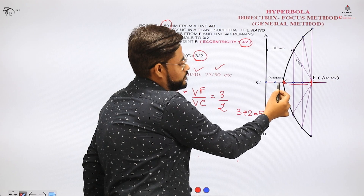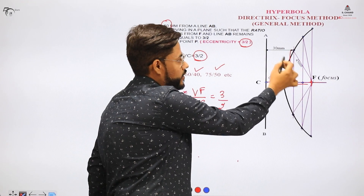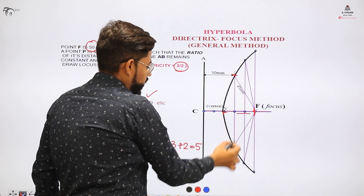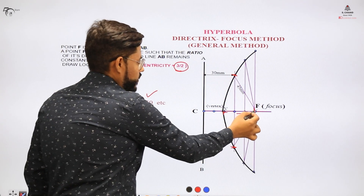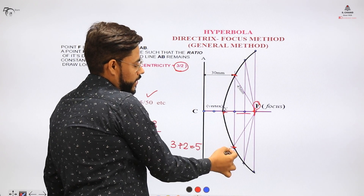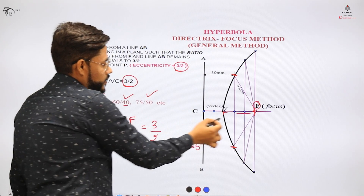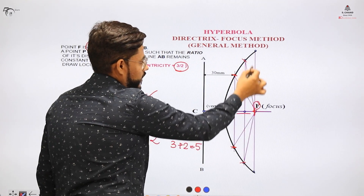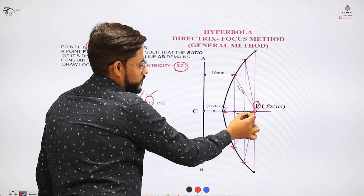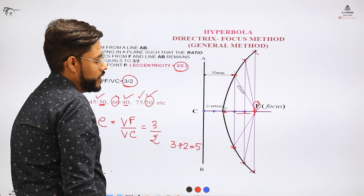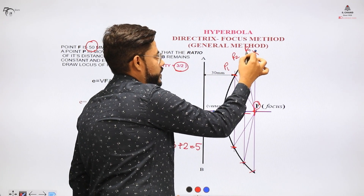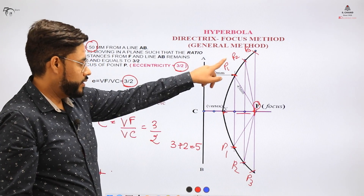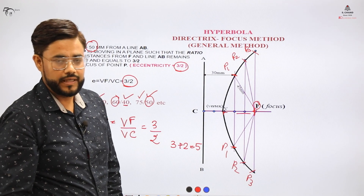The denominator is 30, so we draw a line at 30 and cut an arc. This arc value is 45 from the focus point. From the focus, cut arcs at those two lengths. The next line is at 40 — cut an arc of 60 from point F, above and below. Then draw a line at distance 50 and cut an arc of 75 from F at two points. You will get points P1, P2, P3 above and below. Join them freehand, keeping V in place, to form the hyperbola.